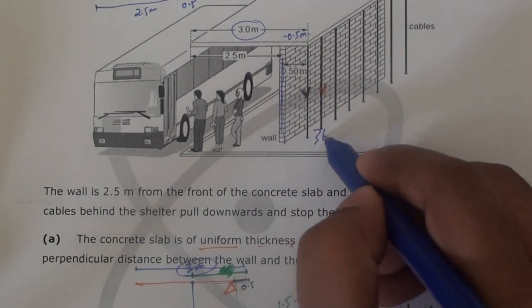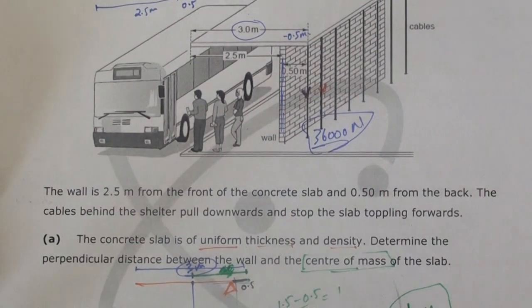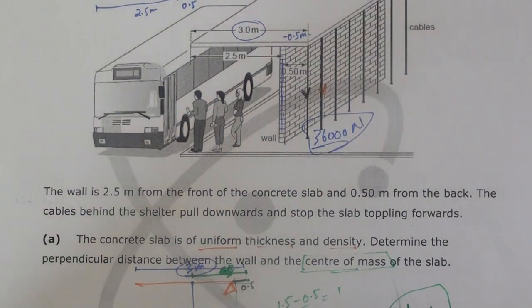So the cables are actually applying downward force. The cables are applying 36,000 newtons. You don't need to write that, I'm just writing it to make you understand. I hope this question is clear. Again, a very technical and interesting question.